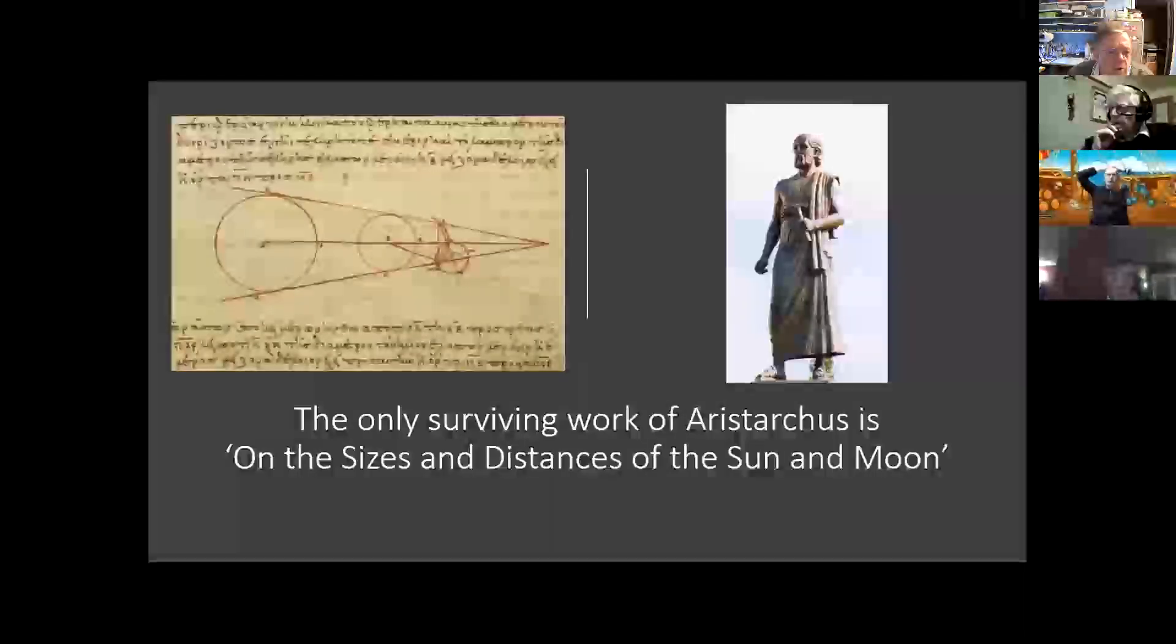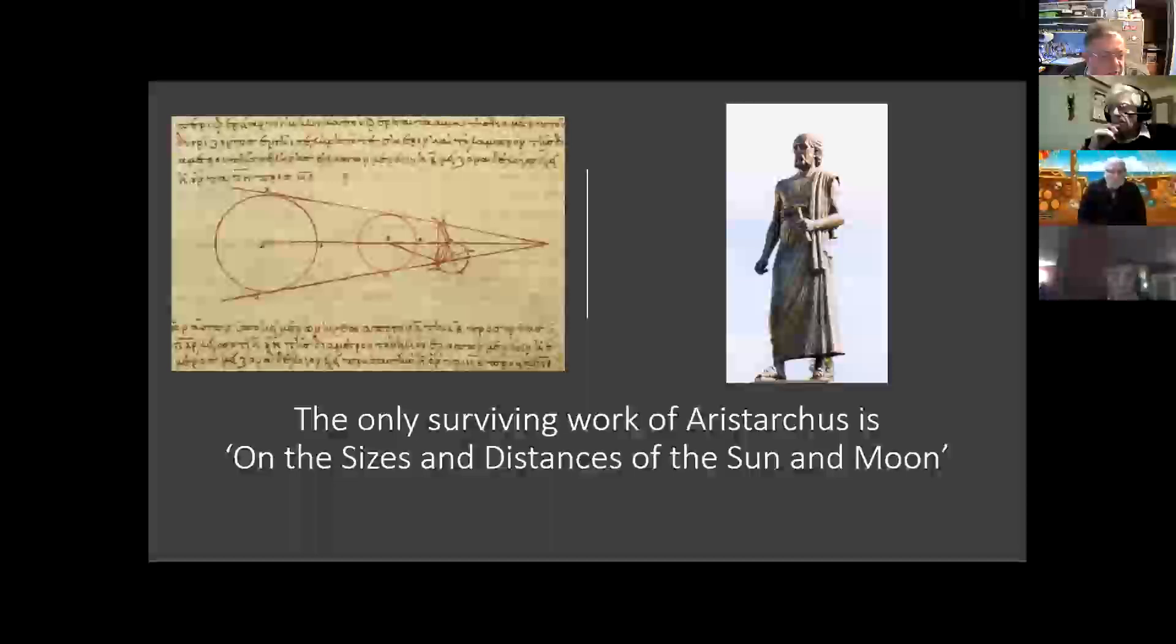Now, we do have a few bits of his surviving work, and one of the fragments is this diagram here, which comes from his publication. The translation of the title is On the Sizes and Distances of the Sun and the Moon. This was a topic which he made great progress in. In that diagram there, the large circle is the Sun, the medium-sized one is supposed to be the Earth, and the small one is the Moon, and we're looking at the Moon going into a lunar eclipse there. That's what that diagram is all about, and I shall explain more as we go through.